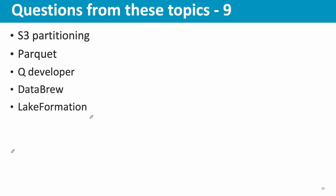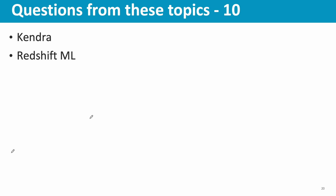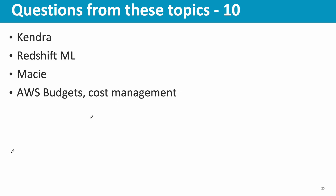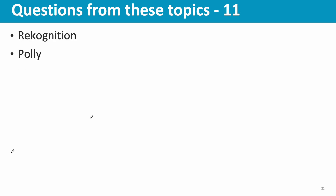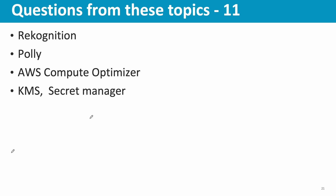S3 partitioning and Parquet — questions covered. Q Developer — one question. DataBrew — one question. Lake Formation — one question. Kendra for semantic search — one question. Redshift Machine Learning — one question. Macie and AWS Budgets cost management — questions covered. Rekognition — covered. Polly — covered. Compute Optimizer — one question. KMS and Secrets Manager — questions covered. In total, about 45 topics — if you know all of them, you should be able to get 30-plus questions correct and pass the exam.